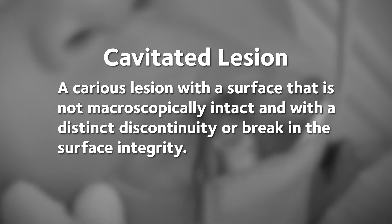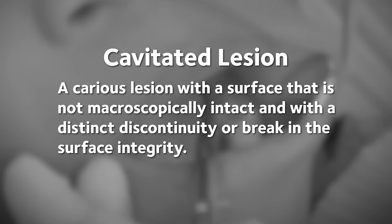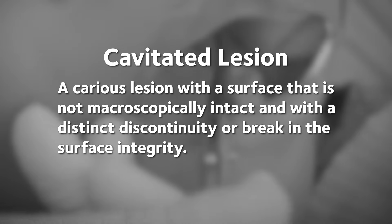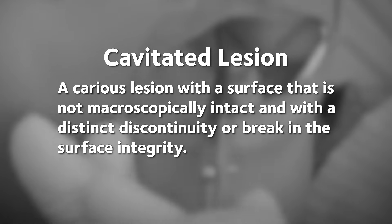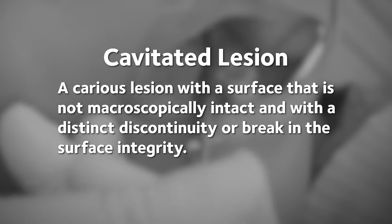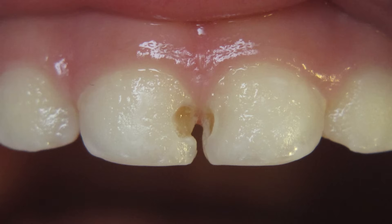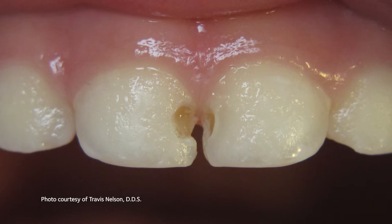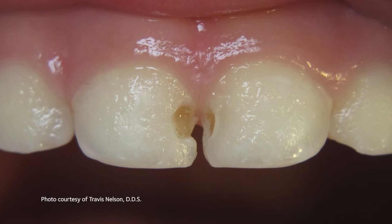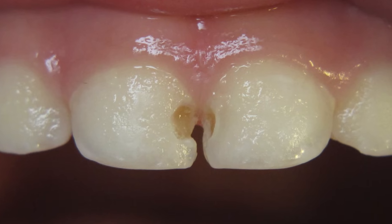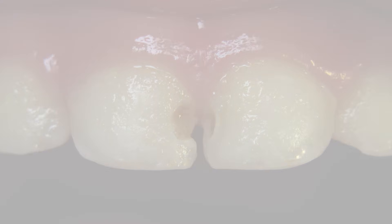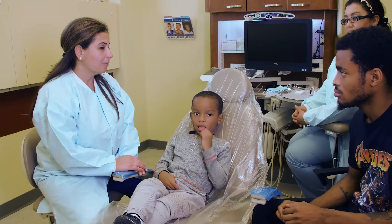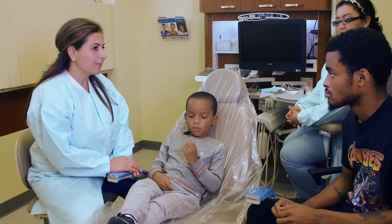A cavitated lesion is denoted by a carious lesion with a surface that is not macroscopically intact and with a distinct discontinuity or break in the surface integrity. Upon identification of a cavitated lesion, SDF can be considered as an intervention to arrest carious lesions. Make sure to discuss the effects of SDF with patients.